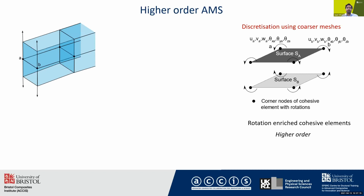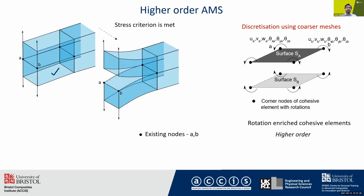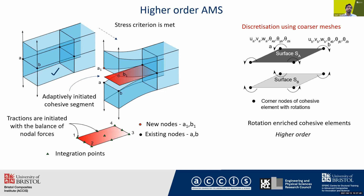A demonstration of the adaptive method is described in this slide with the help of a double cantilever beam specimen. Soon after a segmentation criterion is met in an element, discontinuity is initiated by inserting new nodes and cohesive segments are adaptively formed between them. Linear momentum balance is maintained by introducing compatible surface traction.